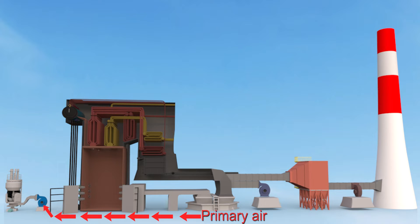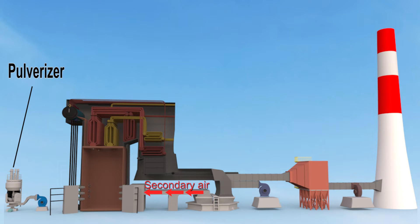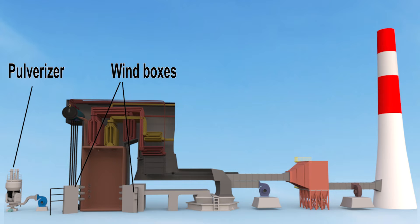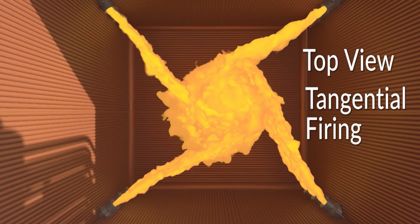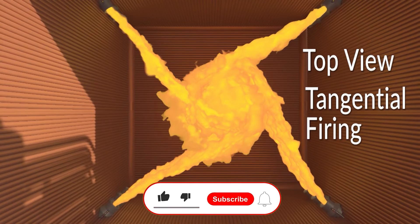Primary air is sent to mills, also called pulverizers, whereas secondary air is sent to the wind box attached to the furnace wall. Nozzles of the wind box discharge secondary air to the combustion chamber, aiming air towards the center where a fireball forms during tangential firing. In the combustion chamber, secondary air facilitates proper mixing of pulverized coal with air, regulating proper combustion of coal and maximizing fuel efficiency.